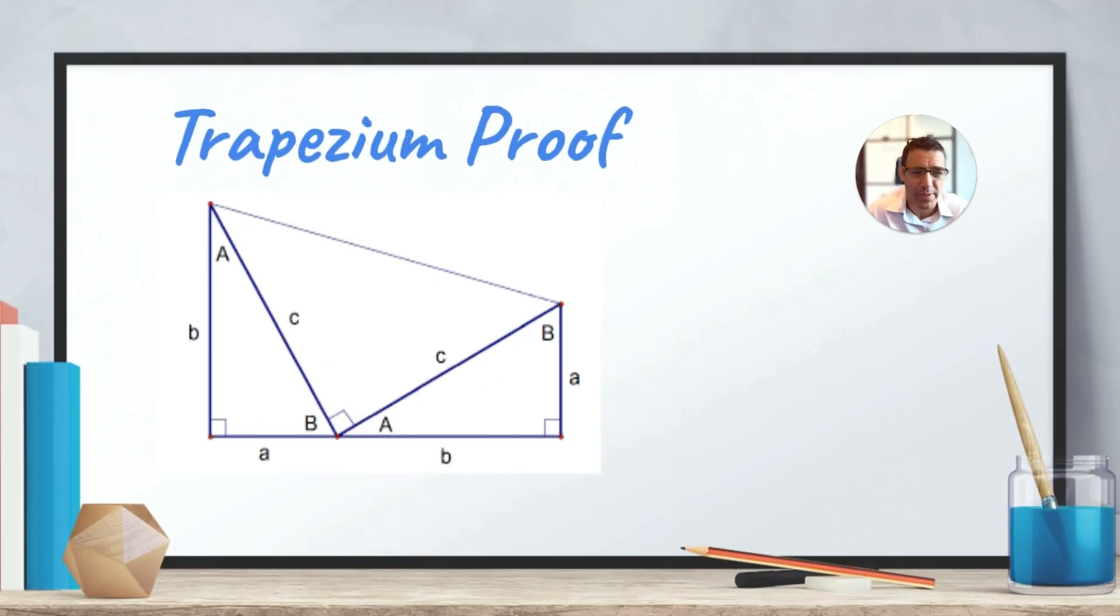Now there are many proofs to the Pythagorean theorem. There's a proof here with a trapezium, and so if you were to try and find the area of the trapezium using the average of the base a and the base b, you'd be able to prove the Pythagorean theorem. It's quite involved. I'm not going to get into this proof today.